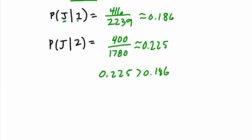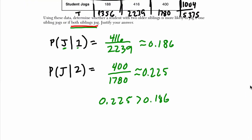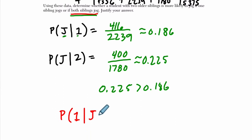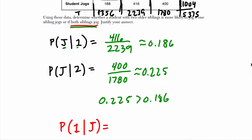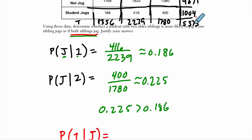And I even first did this when I set this up, kind of did it backwards. I said, what's the probability—and I'll write in red because this is a mistake now—that one sibling jogs given that we're looking at the joggers. And here, if you look at this, this is incorrect. If you look at all the people who jog, you've got 1,004 of them. There are 416 who have one sibling that jogs, out of 1,004.